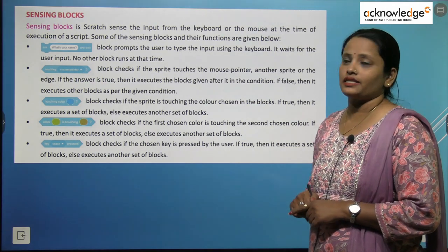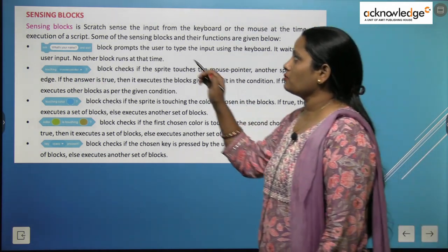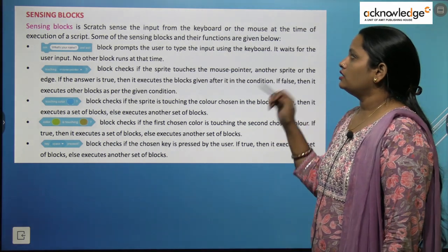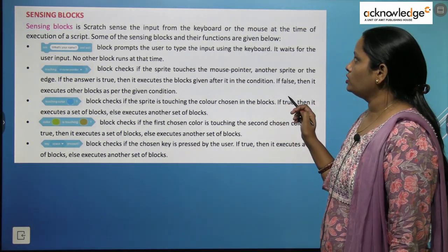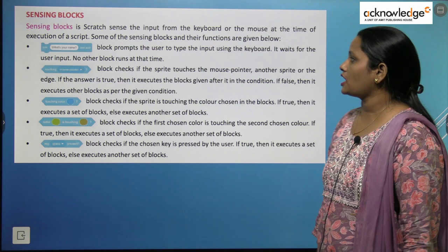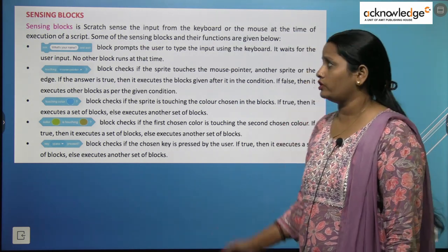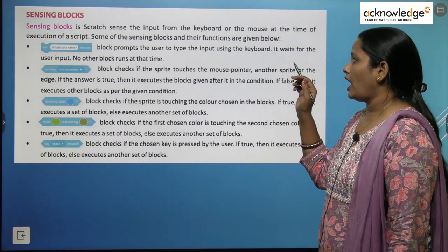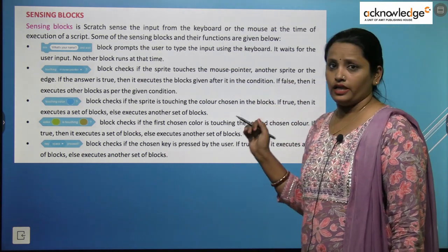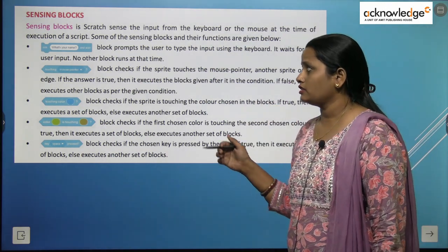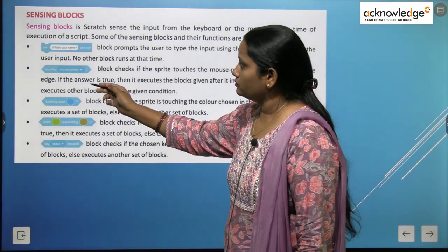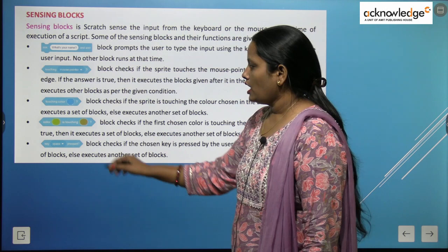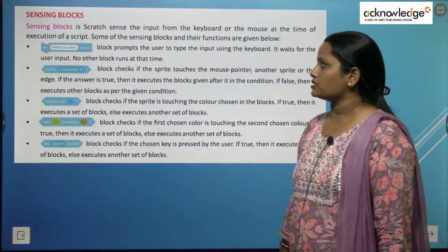Next comes sensing blocks. Sensing blocks in Scratch send the input from the keyboard or the mouse at the time of execution of the script. Some of the sensing blocks and their functions are: 'What is your name?', mouse pointer, touching color, color is touching, and key space pressed.